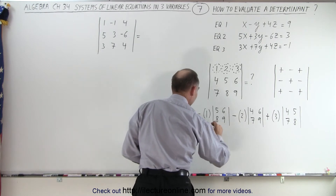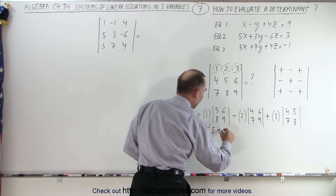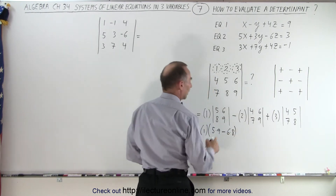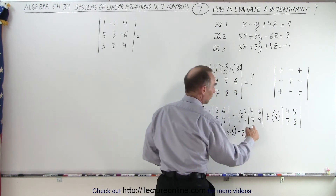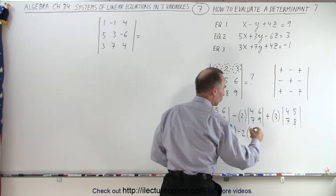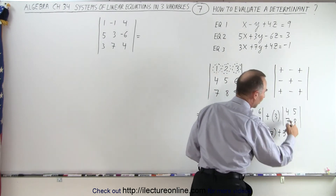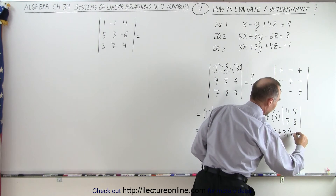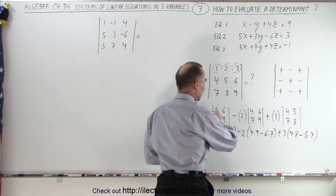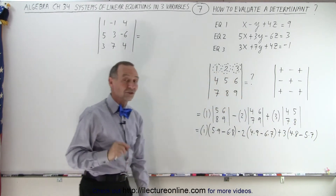This is equal to 1 times (5 times 9 minus 6 times 8), minus 2 times (4 times 9 minus 6 times 7), plus 3 times (4 times 8 minus 5 times 7). Each term multiplies the top-row number by the difference of the diagonal products of its corresponding 2x2 mini-determinant.